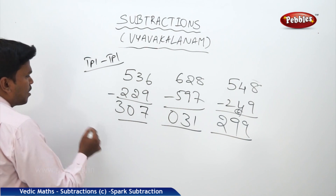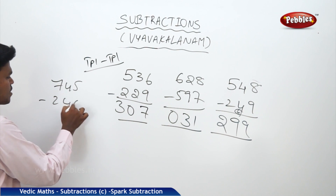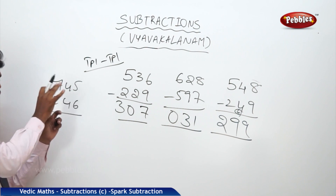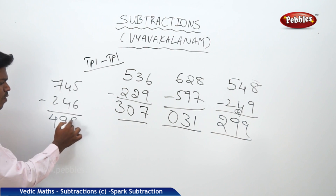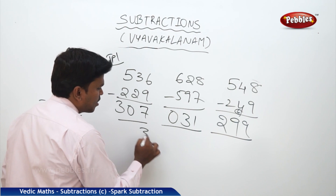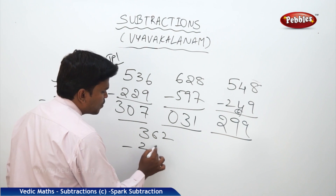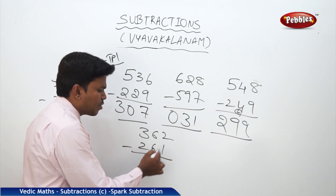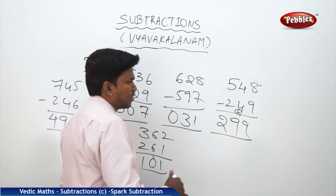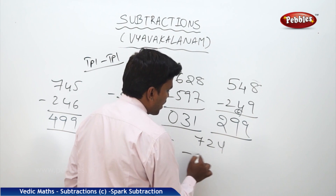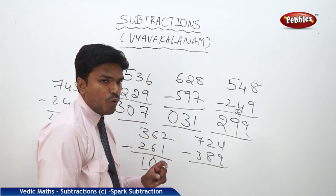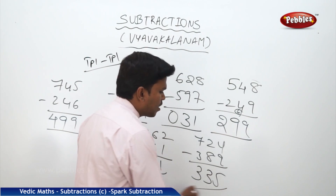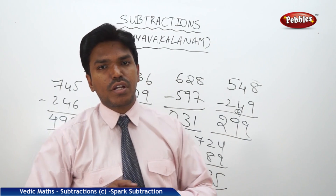One more example: 745 minus 246. 7 minus 2 is 5, but the next numbers are mismatched, so 5 becomes 4. This one becomes 9: 5 plus 4 is 9. So my answer is 499. Next: 362 minus 261. 3 minus 2 is 1. Because next numbers are match, it stays 1. 6 minus 6 is 0. 2 minus 1 is 1. Like that we can do triple minus triple digit.